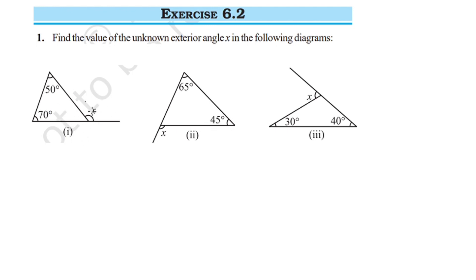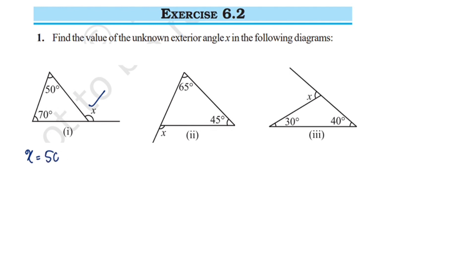We will find the value of x in the following diagram. We will find the value of the two opposite interior angles and their sum. The two angles are equal to the opposite interior angles, so x is equal to 50 degrees plus 70 degrees.